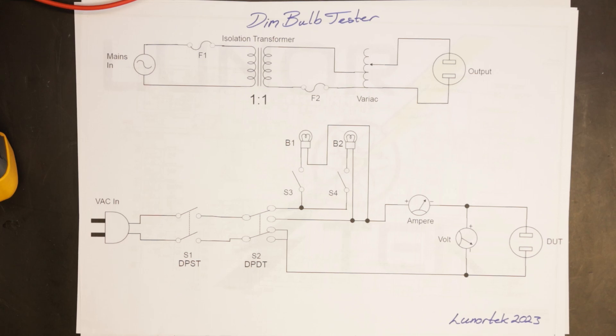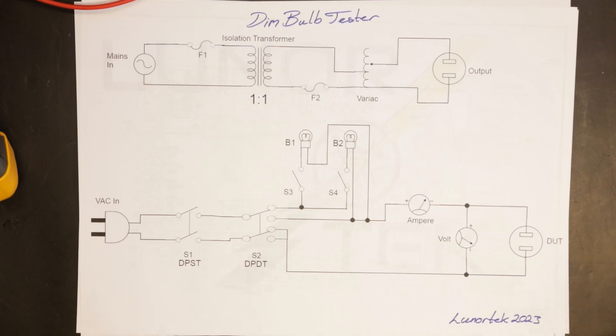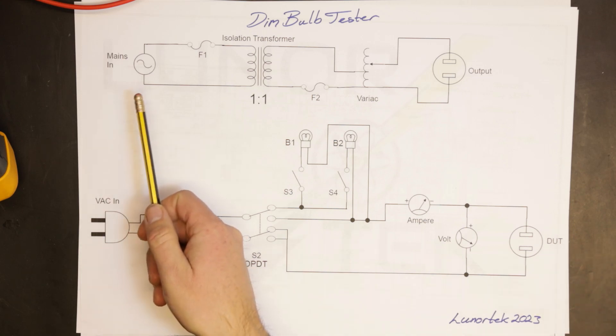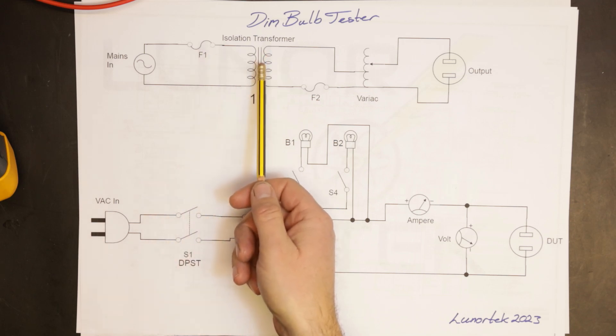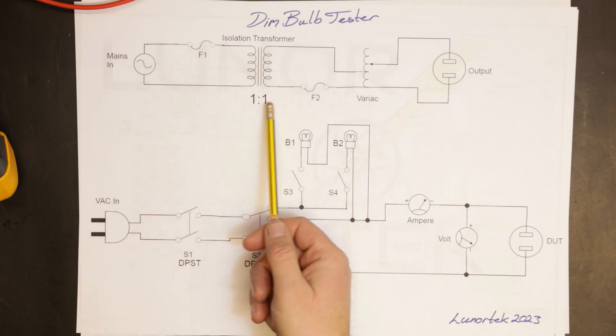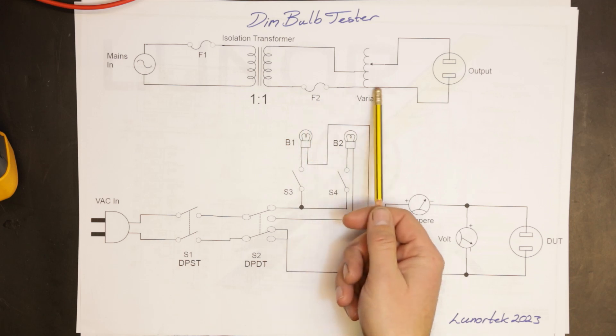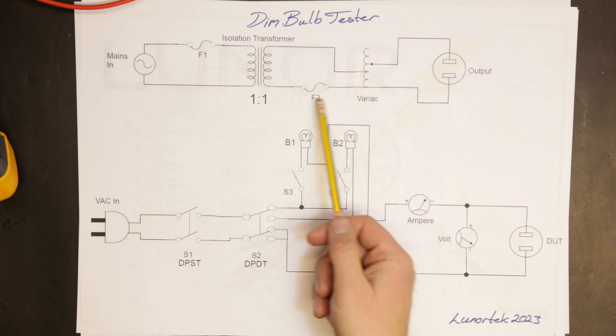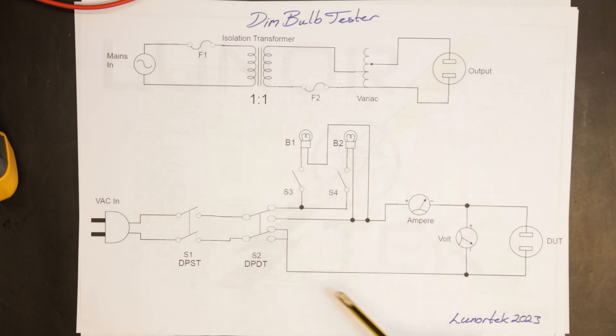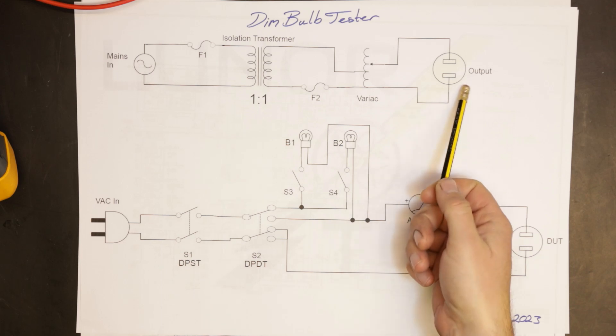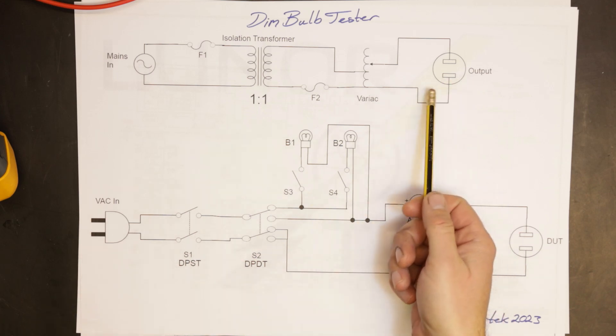Okay, so here is my schematic for the dim bulb tester. I made it quite simple. We've got your mains in with a fuse, the isolation transformer one-to-one, then your variac with a fuse, then your output. Then you connect your dim bulb tester to the output of your variac.